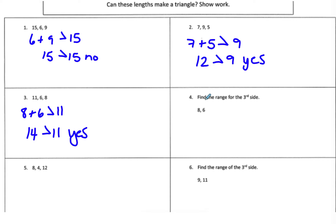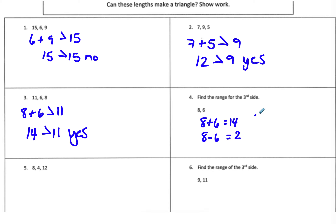For number four, find the range for the third side. To do that, we add and subtract the two given numbers. 8 plus 6 equals 14, and 8 minus 6 equals 2. So the range for the third side is 2 is less than X, which is less than 14.